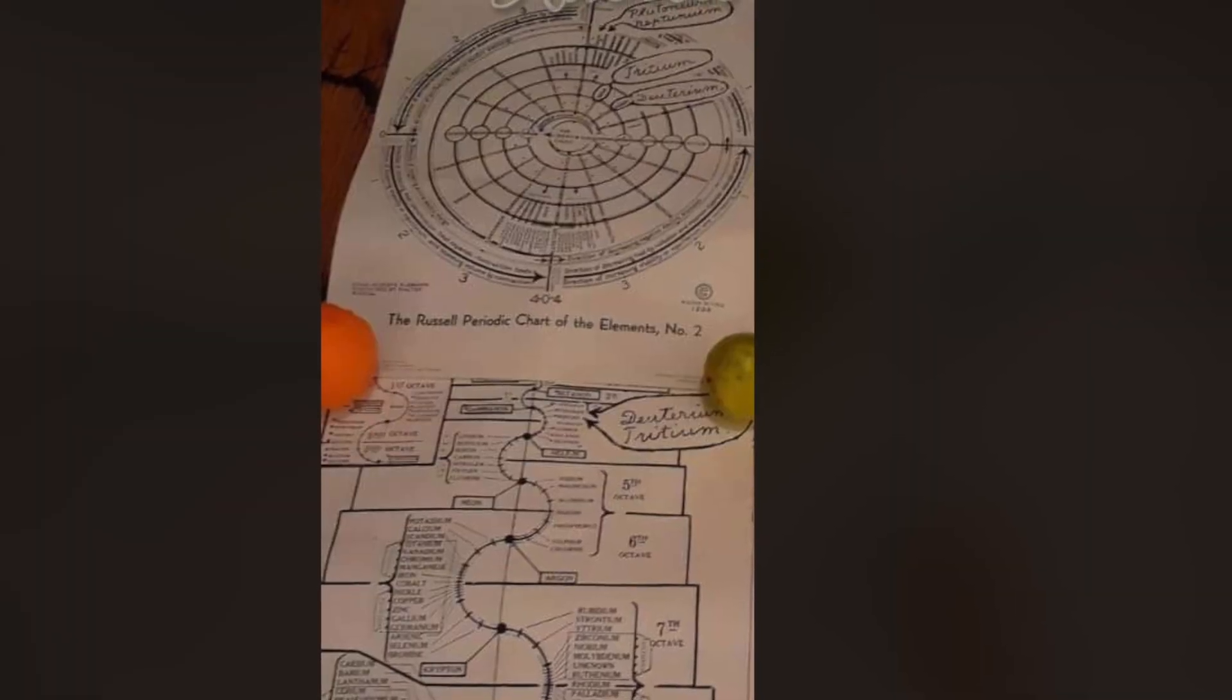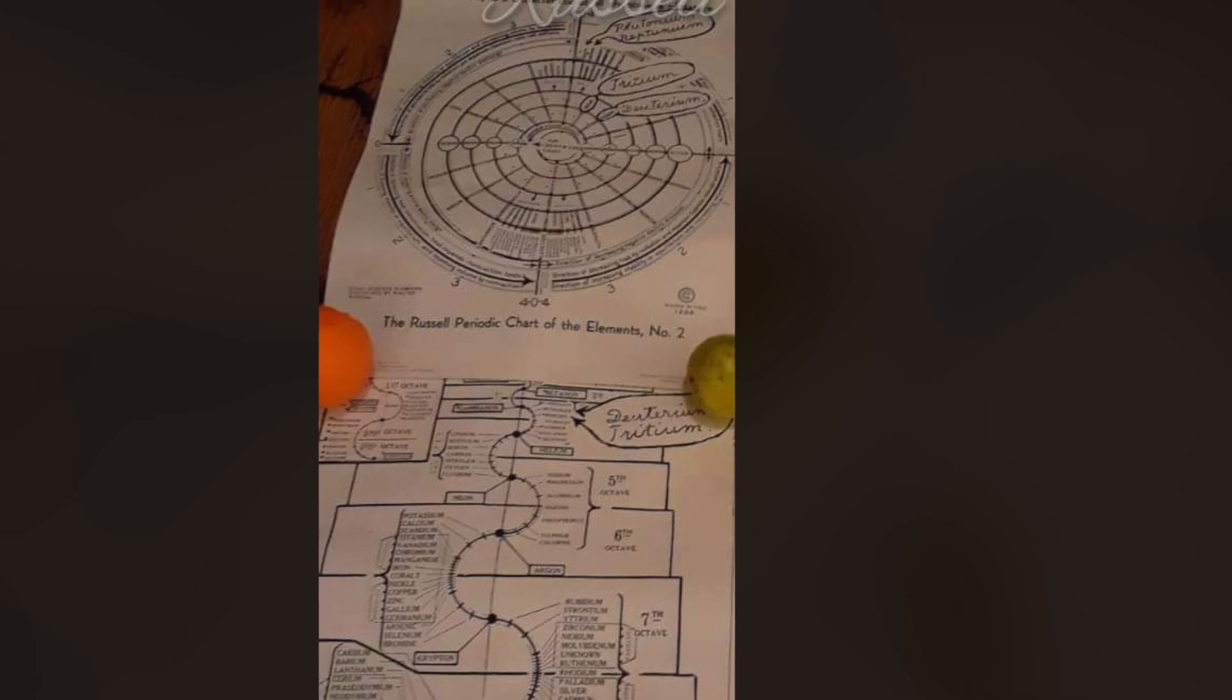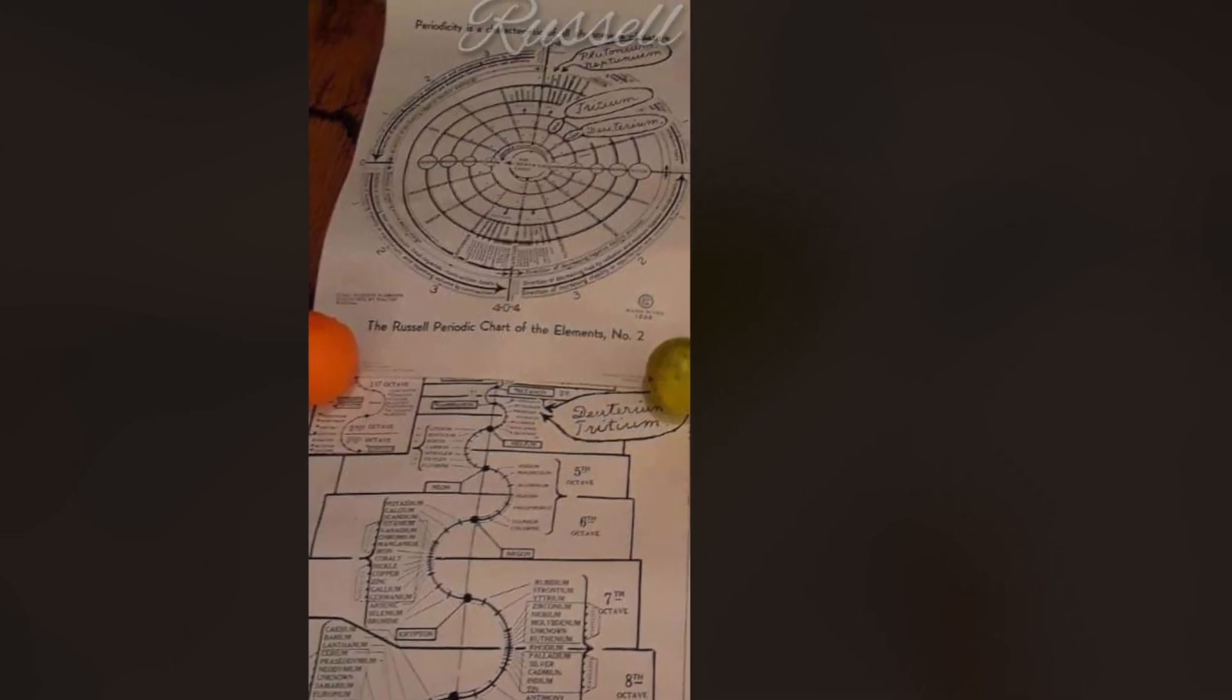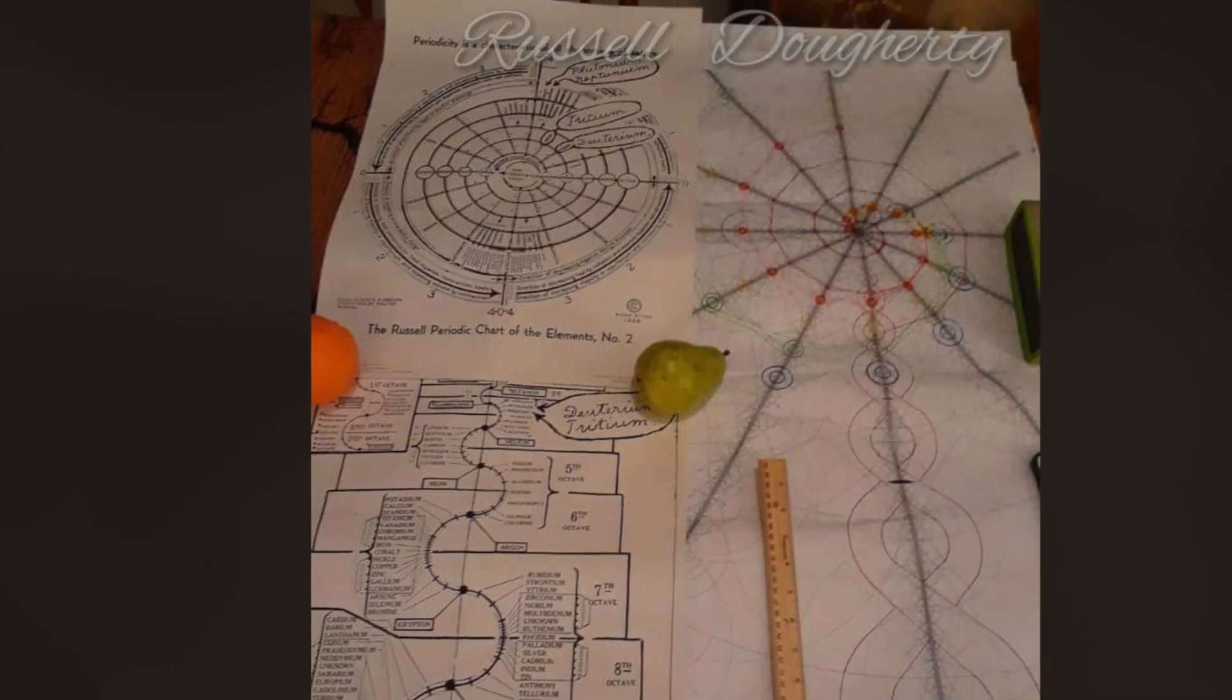A process is very different from a shape, but a shape can also be many processes. Now let's compare all of this to the spiral periodic table of elements. Here's Walter Russell's periodic table of elements and here is the Doherty periodic table of elements.